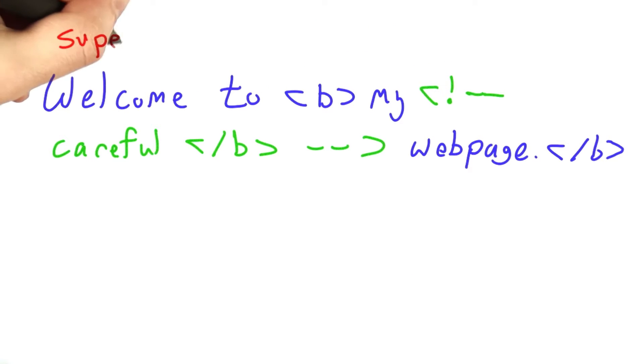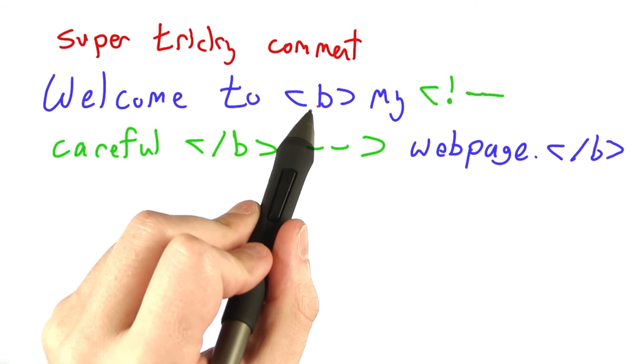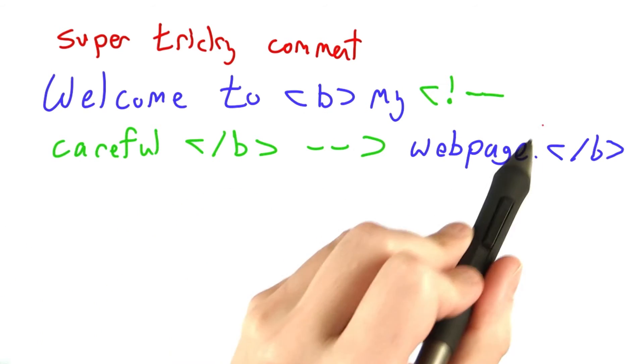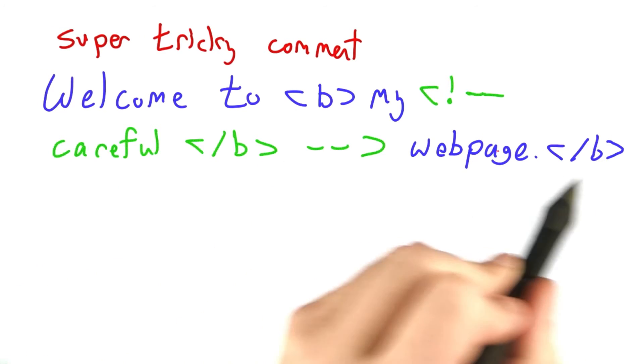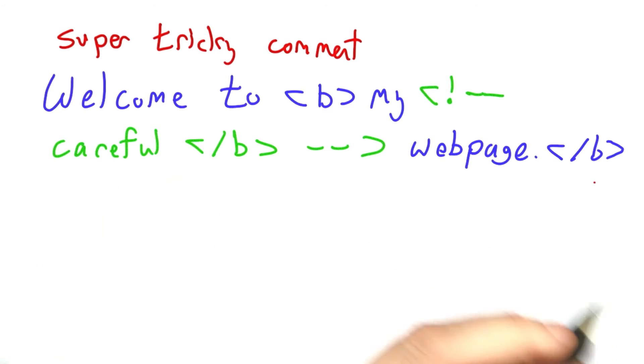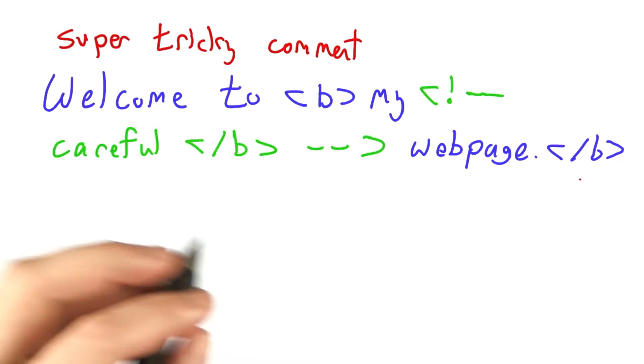Let's consider a super tricky comment example. Here we have: welcome to bold tag, my comment that closes the bold tag, web page, close the bold tag again. The question for you is, how will this render? Which of these words will be bolded?